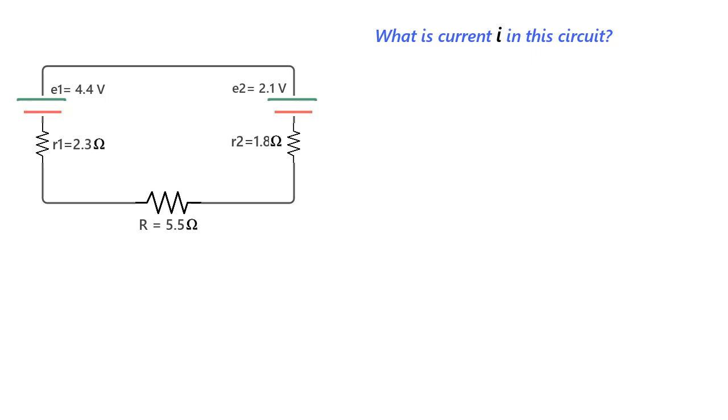So to find the answer, let us label the direction of I this way since we can see that EMF of this battery is more than that of this one, and therefore this battery will control the direction of the current. But even if you for some reason did not know the EMF values, you could have assumed some direction and proceeded.